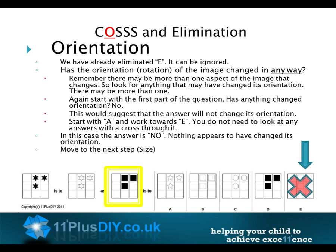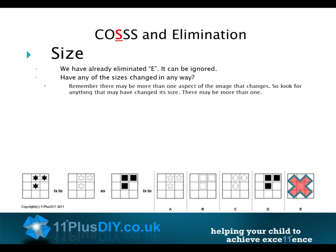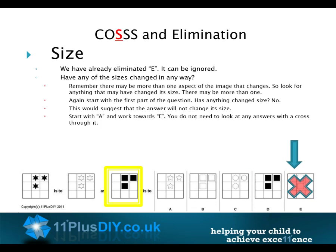Move to the next step: Size. We have already eliminated E — it can be ignored. Have any of the sizes changed in any way? Remember, there may be more than one aspect that changes. Starting with the first part of the question — has anything changed size? No. This would suggest that the answer will not change its size. Working from A towards E, nothing appears to have changed its size.